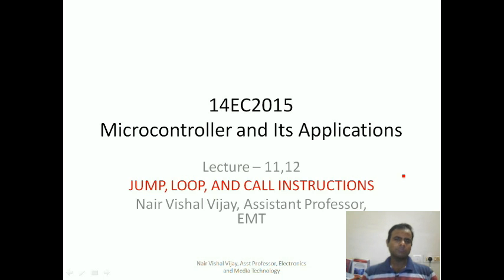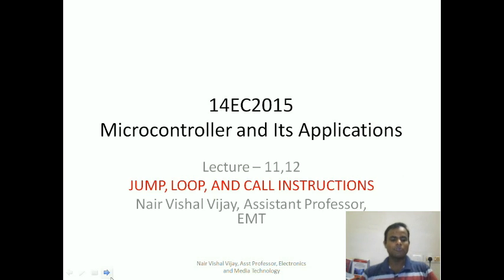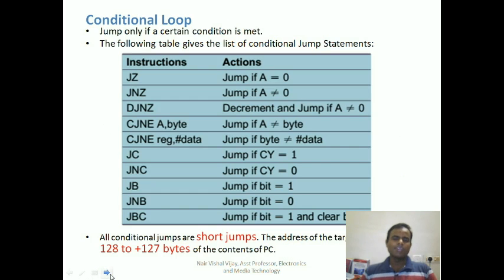Let's see what are the different jump, loop and call instructions. As we have studied in other microprocessors, jump instructions are basically of two types: one is conditional jump and one is unconditional jump.